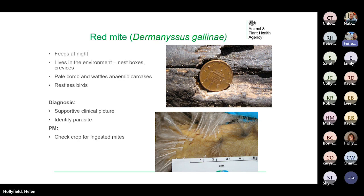Clinically you see signs of anaemia — a pale comb and wattles — and you may notice that the birds are restless. Red mite can also present as mortalities if the infestation is severe. Diagnosis is based on a supportive clinical picture and identifying the parasite. At post-mortem, as well as looking for mites on the carcass, also check the crop for the tell-tale sign of ingested mites.